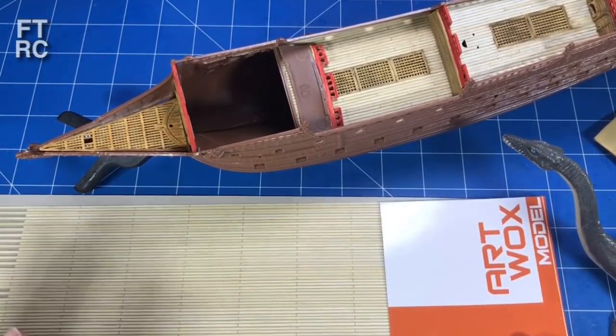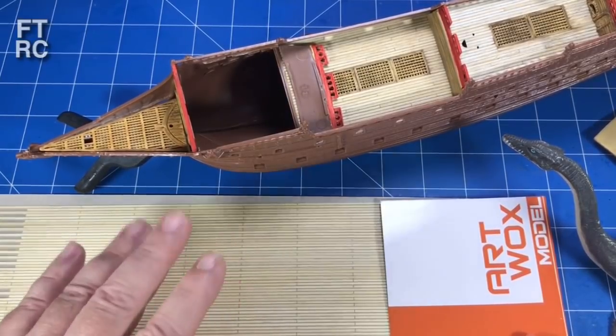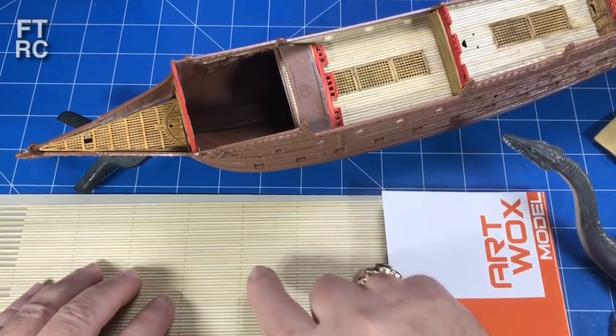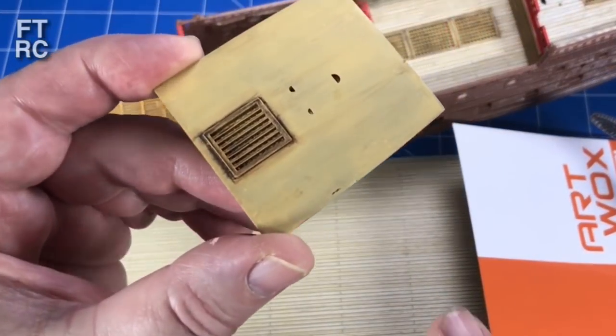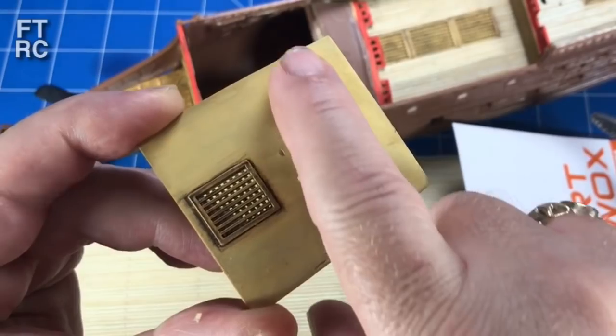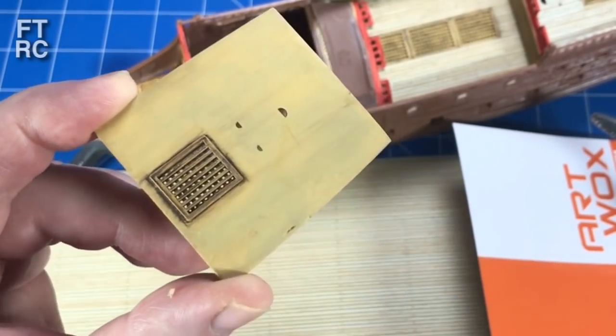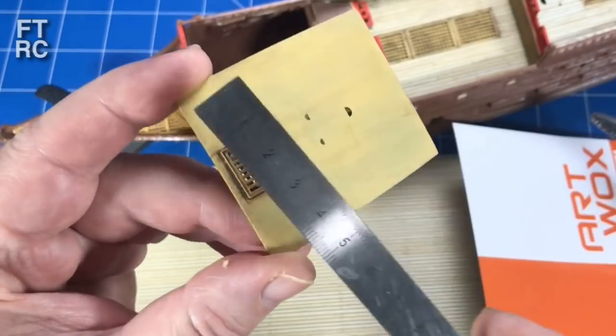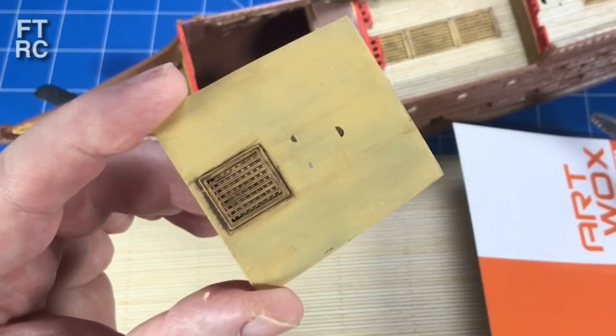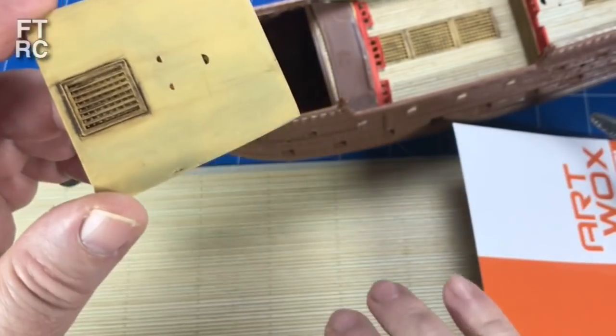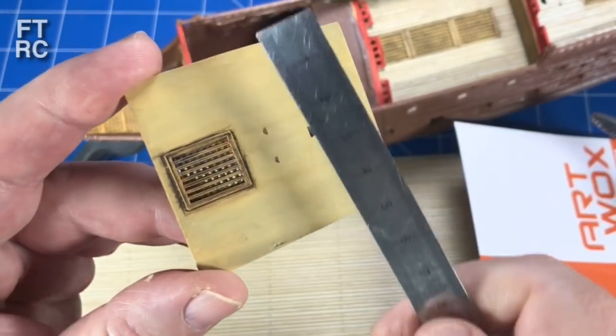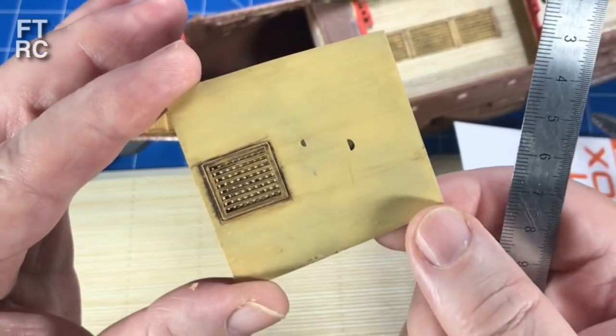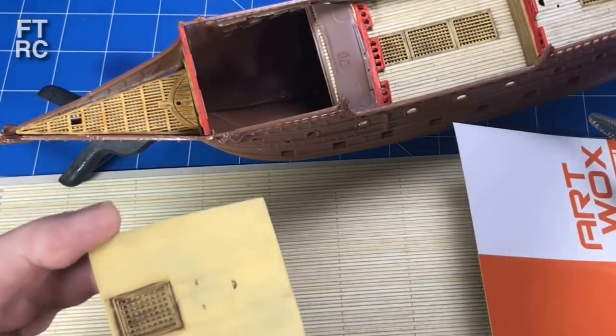These planks are 65 millimeters, which when you scale it up is about 10 meters. So they're about 30 foot planks, which is about right. Now to work out the size planking you're going to need, you can see it sometimes on the molding and the kit maker may have got it correct. In this case, Airfix has scored the planks there.